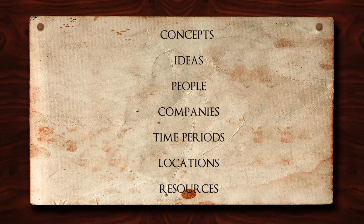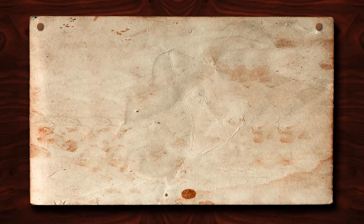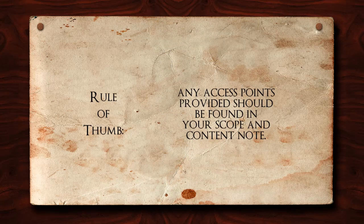Subjects include concepts or ideas, people, companies, time periods, locations, or resources. These are the same things that you should have already recorded in your scope and content note, which can be used as a source for identifying subject access points. It is a good rule of thumb that any access points provided should be found in your scope and content note, or conversely, that if it was not worth mentioning there, it probably does not merit an access point.